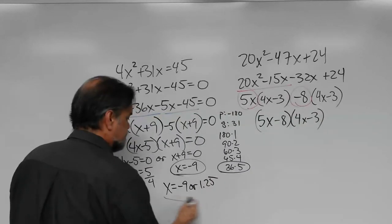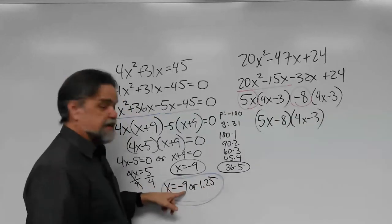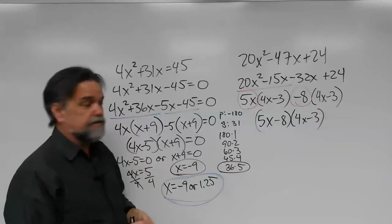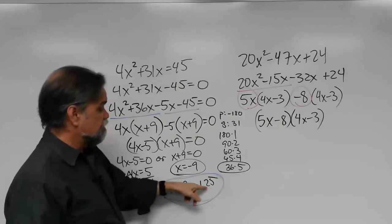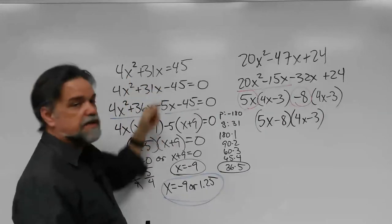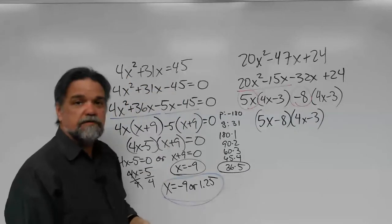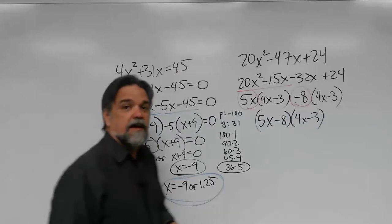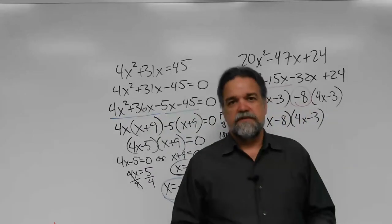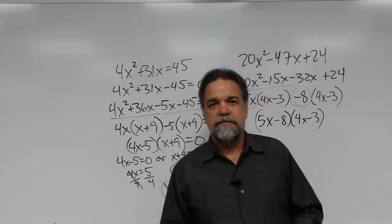Take negative 9, substitute in for x, and you'll find you get 45. Take 1.25, substitute it for both x's, and you'll see you also get 45. I hope this helped. That's what the pause button is for. I hope this did help and I'll see you next video. Bye-bye.